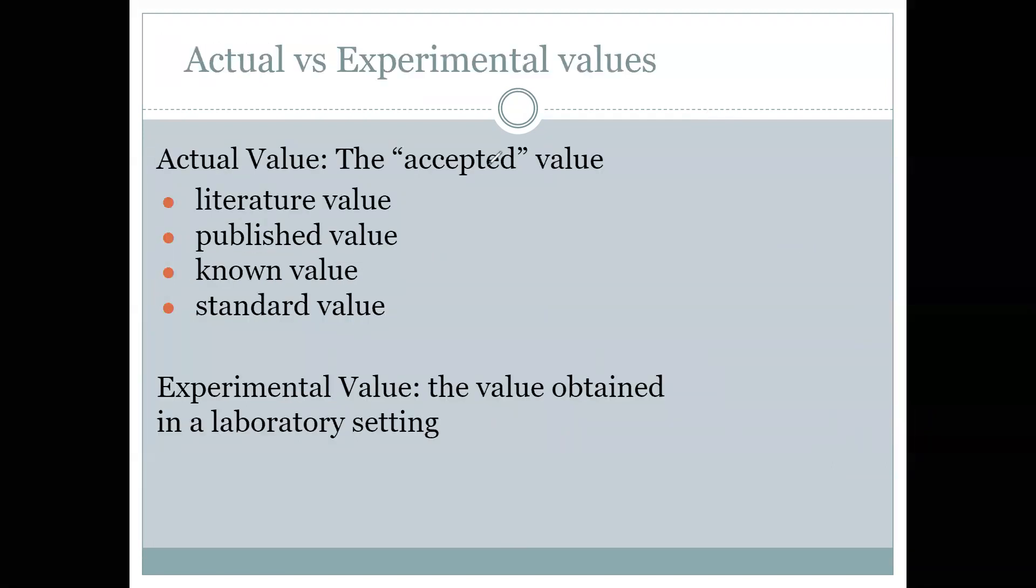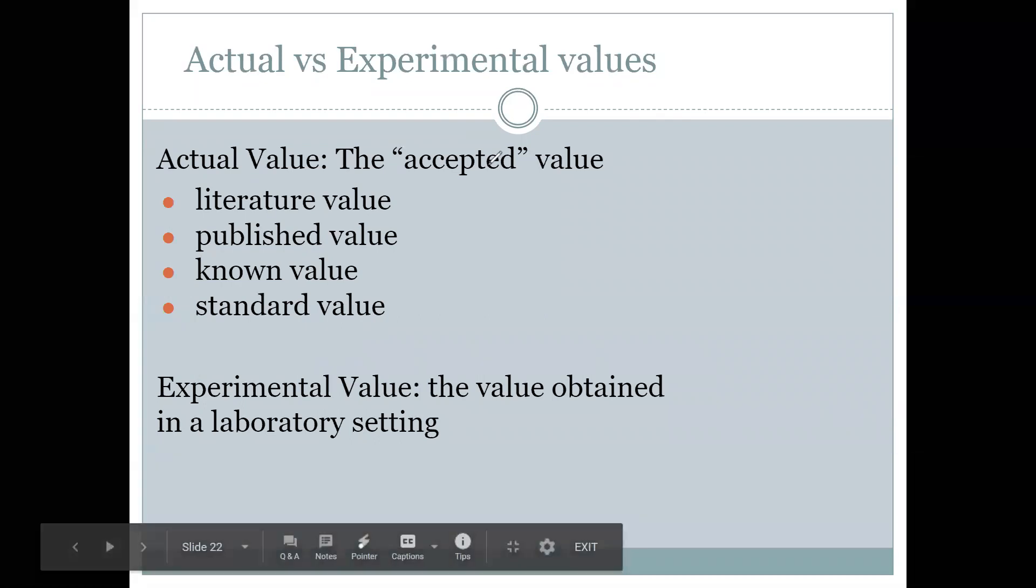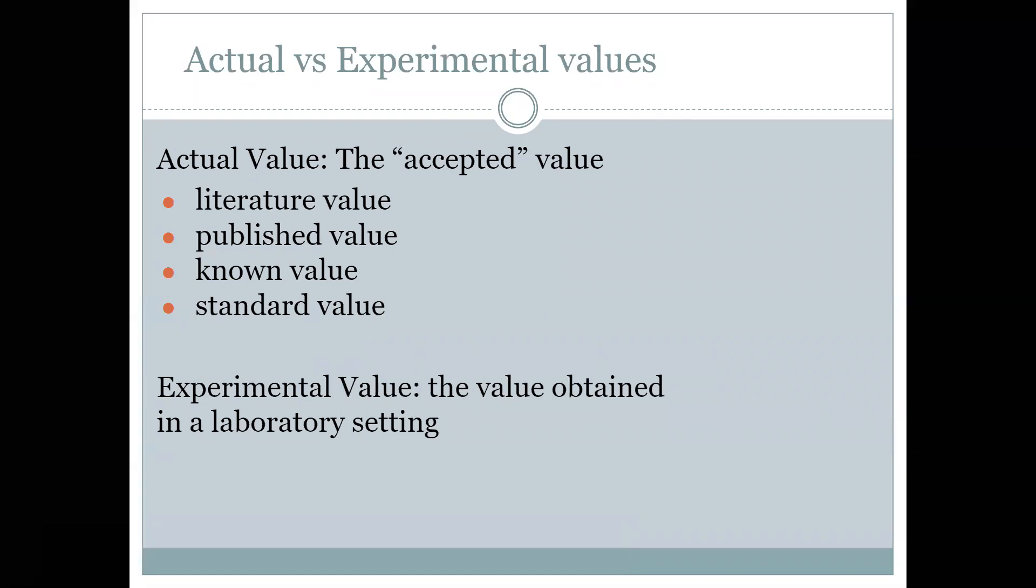Your actual value is anything that you could get in a literary text. So assuming you were reading a scientific book, that's something that you could get through that information or a known value or a standard value or something that's been published by researchers and vetted. Your experimental value is going to be what you obtained in a lab setting.